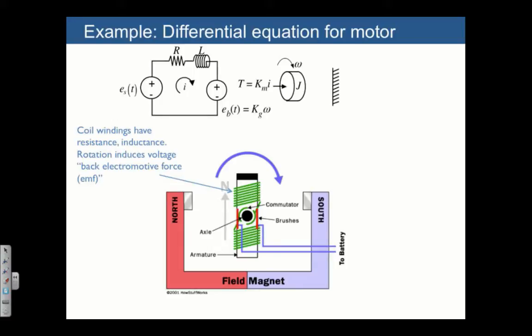the rotation also induces a backwards voltage, also called back EMF or back electromotive force. On the mechanical side of the system, there's a mass, which is meant to indicate the inertia of the rotor. The torque acting on the rotor is proportional to the current flowing through the electrical side of the system.